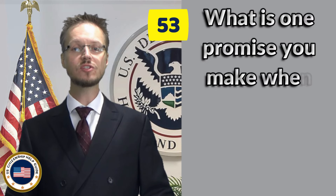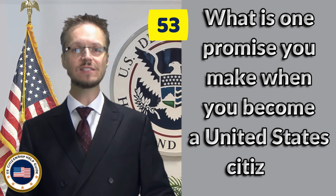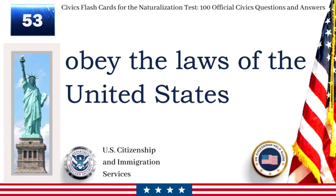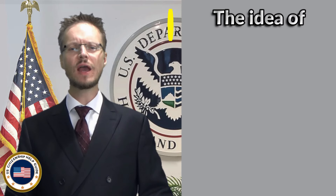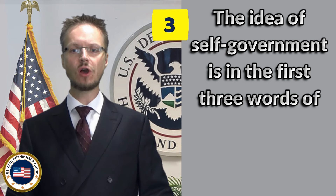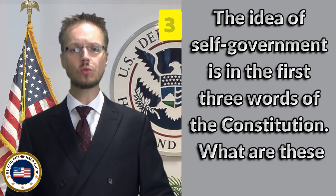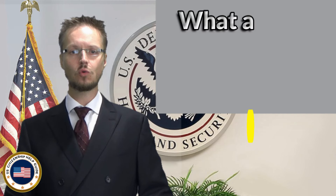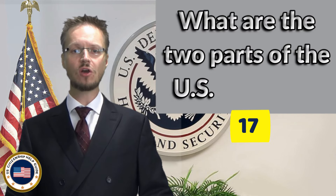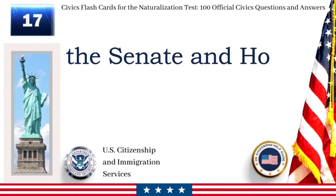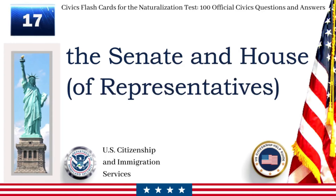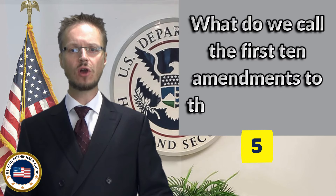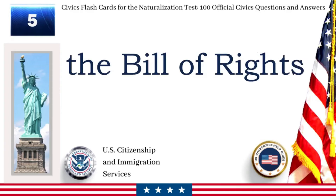What is one promise you make when you become a United States citizen? Obey the laws of the United States. The idea of self-government is in the first three words of the Constitution. What are these words? We the people. What are the two parts of the U.S. Congress? The Senate and House of Representatives. What do we call the first ten amendments to the Constitution? The Bill of Rights.